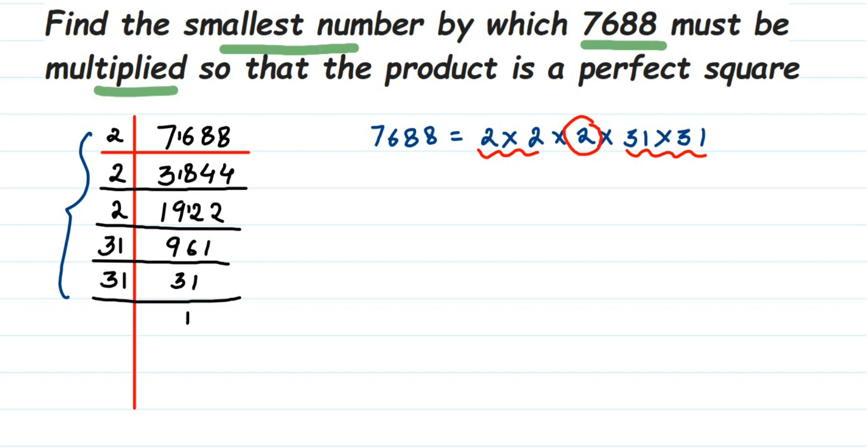If there was another two here, it would form a pair. So the smallest number to be multiplied here will be two, because if there's another two it will form a pair.